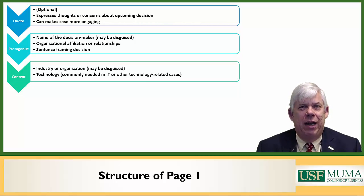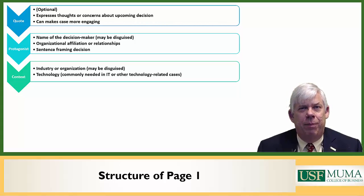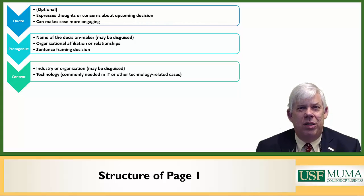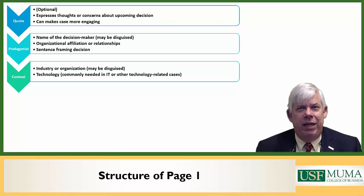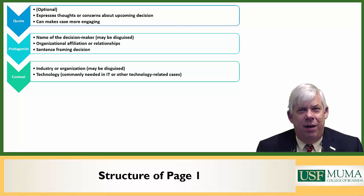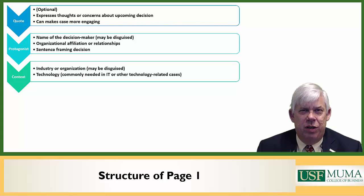This is going to be important, for example, for a faculty member considering adopting a case. If a faculty member wants a case on identity theft, he or she should be able to tell by reading the first page whether or not this case is going to delve into the issues associated with identity theft.